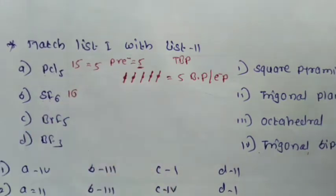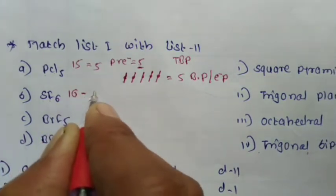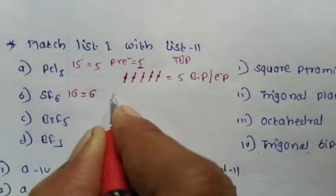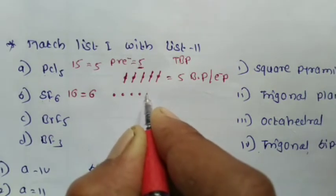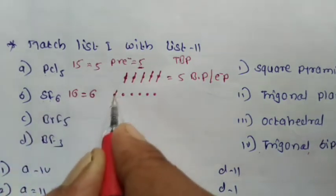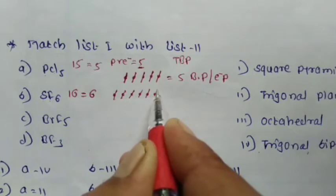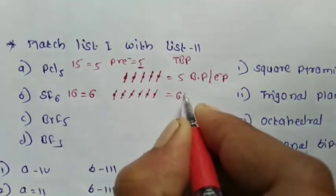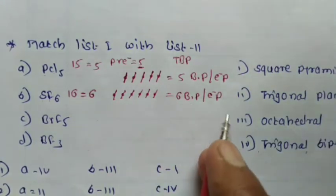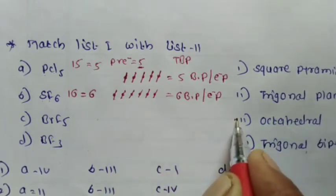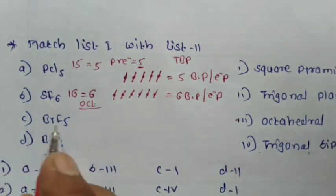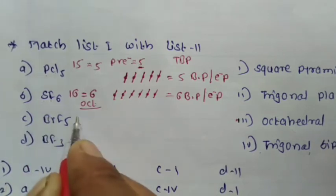SF₆: Sulphur is a group 16 element with 6 valence electrons. With 6 fluorine atoms attached, SF₆ forms 6 bond pairs and 0 lone pairs. When a molecule has 6 bond pairs, the geometry is octahedral. So SF₆ has octahedral geometry.